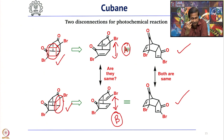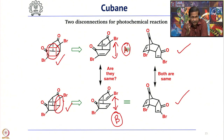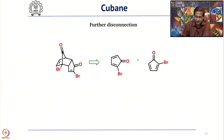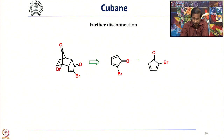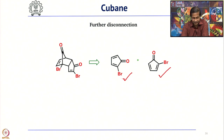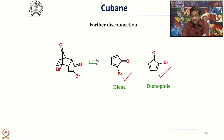You have to do a retrosynthesis of this compound. As you can see, this is obviously a Diels-Alder product. So the precursor is: diene and dienophile — both are the same molecule. One acts as the diene, the other as the dienophile. As you know, cyclopentadienone is not stable — as soon as it is formed, it immediately undergoes 4+2 cycloaddition.